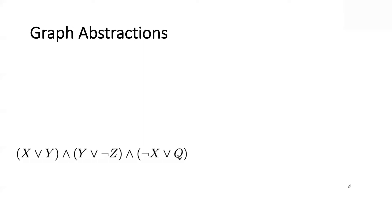Let's say you want to take the CNF and compile it to a certain circuit — say a DNNF, an SDD, or an OBDD. You can offer guarantees on the time and space complexity of that compilation process, which implies also a guarantee on the size of the tractable circuit, by reasoning about the graph abstraction.